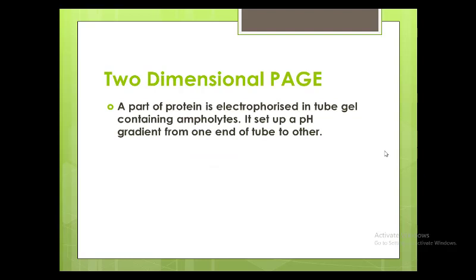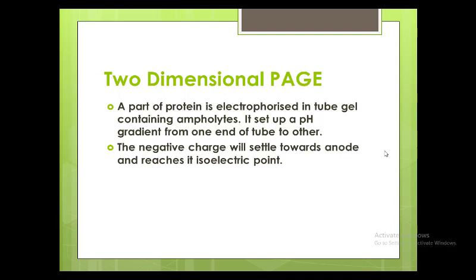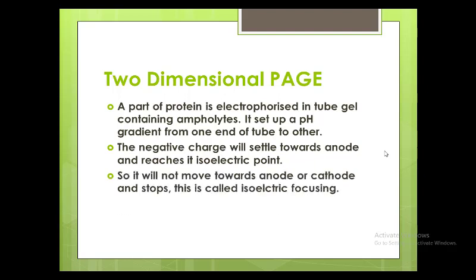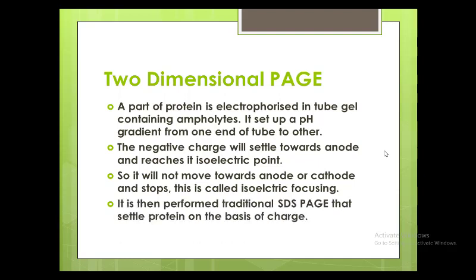What is 2D PAGE, or two-dimensional PAGE? A portion of the protein is electrophoresed in a tube gel containing ampholytes. It gives better results compared to SDS-PAGE. A pH gradient is set up from one end of the tube to the other. The negatively charged molecules settle toward the anode and reach their isoelectric point, where they stop moving — this is called isoelectric focusing. A traditional SDS-PAGE is then performed, separating the proteins on the basis of their molecular mass.